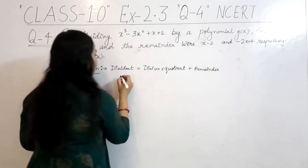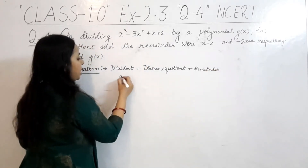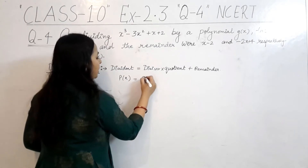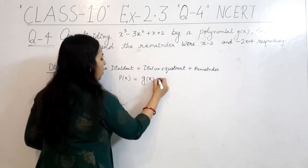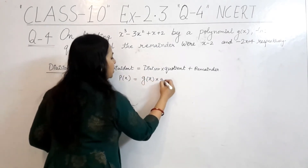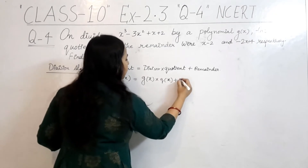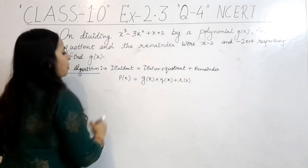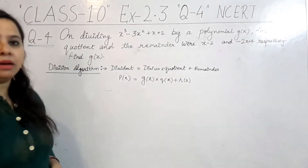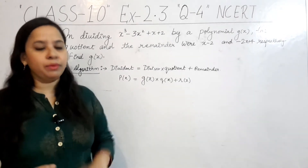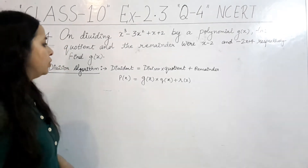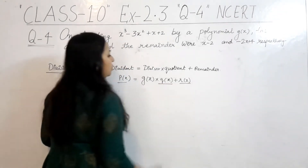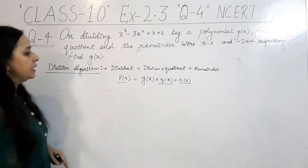Now, if our dividend is p(x), divisor is g(x), quotient is q(x), and remainder is r(x) — we normally use these four terms: dividend, divisor, quotient, and remainder. Three things are given; what do we need to find? We need to find g(x).